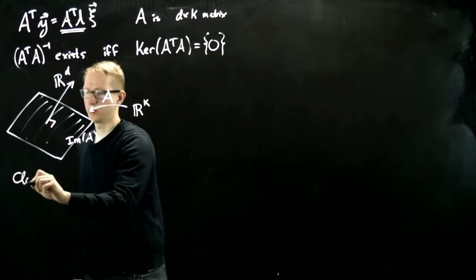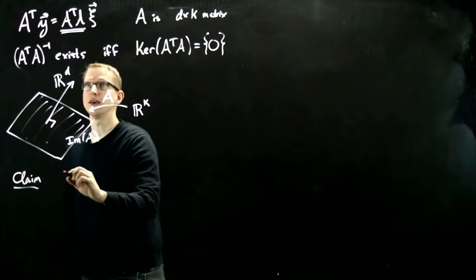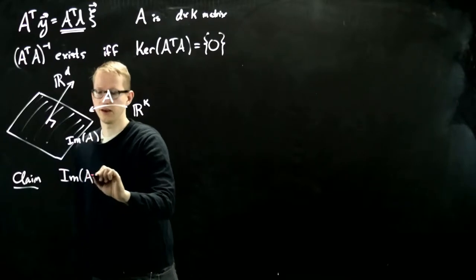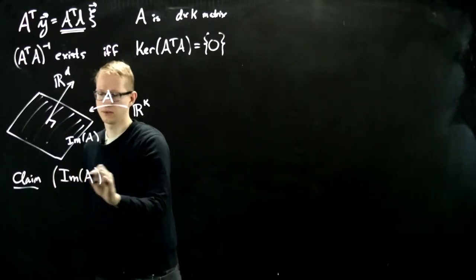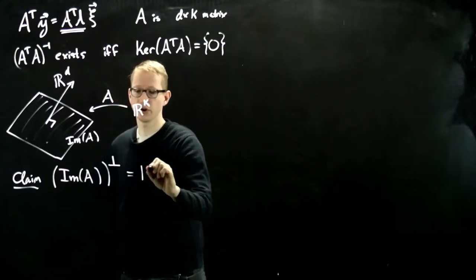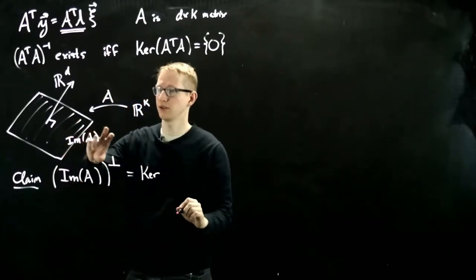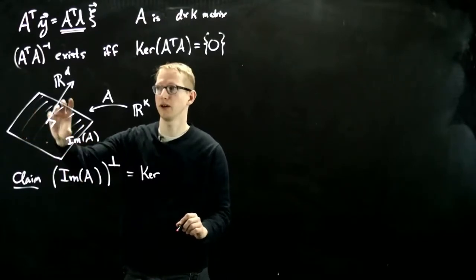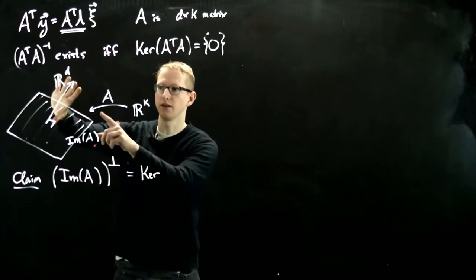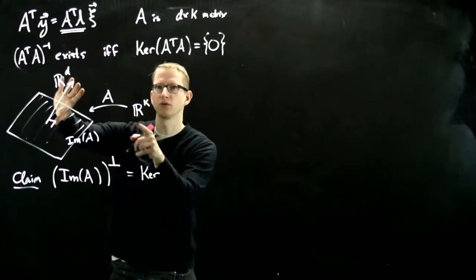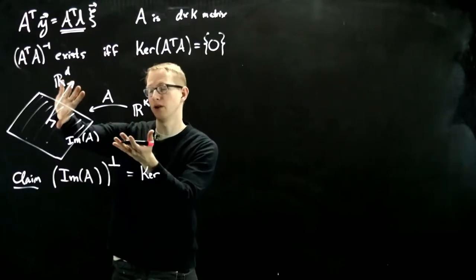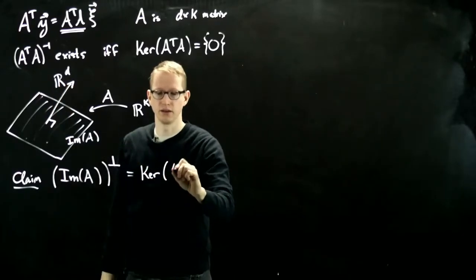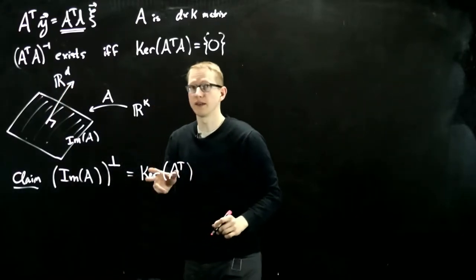So the first claim that we'll prove is that the orthogonal complement of the image of A equals the kernel. Now in order for this to make sense, I need to take the kernel of some matrix. The image of A is in RD, its orthogonal complement is also in RD. And I can't take the kernel of A because that wouldn't make sense. So the only other thing I can take the kernel of is the kernel of A transpose, and it turns out that these two are equal.